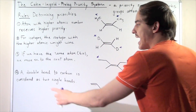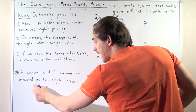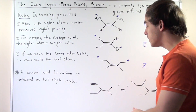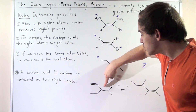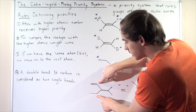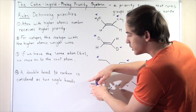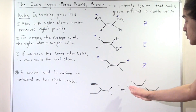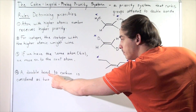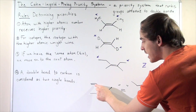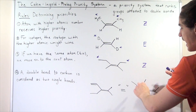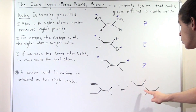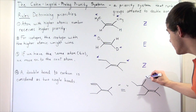Rule number four: a double bond to a carbon is considered as two single bonds. For our carbon-carbon double bond, examining the groups attached to the first carbon, we initially see carbon and carbon on each side — no winner yet. But there is a double bond present, and according to rule four, that double bond is treated as two single bonds: we erase the double bond and replace it with one carbon and a second carbon as two more single covalent bonds. Now this side has a higher atomic weight, so this group wins and has the higher priority.